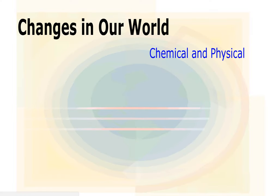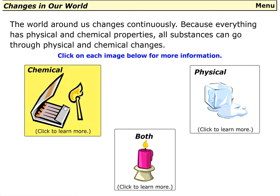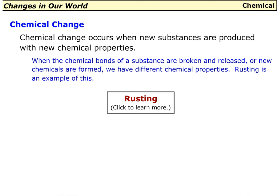Welcome to Changes in Our World: Chemical and Physical. The world around us changes continuously because everything has physical and chemical properties. All substances can go through physical and chemical changes. A chemical change occurs when new substances are produced with new chemical properties, when the chemical bonds of a substance are broken and released, or new chemicals are formed.